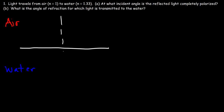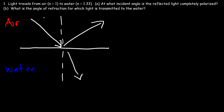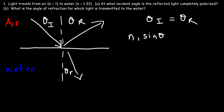Here we have the normal line, this is going to be the incident ray, this is the reflected ray, and that's going to be the refracted ray. This is the incident angle, this is the reflected angle, and this is the refracted angle. According to the law of reflection, the incident angle is equal to the reflected angle, and according to Snell's law: n1 sine theta1 equals n2 sine theta2. Let's say this is n1 and this is n2.